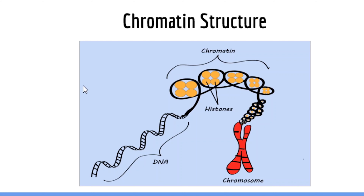If we analyze this image, we can see the double-stranded DNA molecule wrapping around a group of histones to form a nucleosome. Multiple nucleosomes containing histone molecules then form other structures that eventually become part of the chromosome.